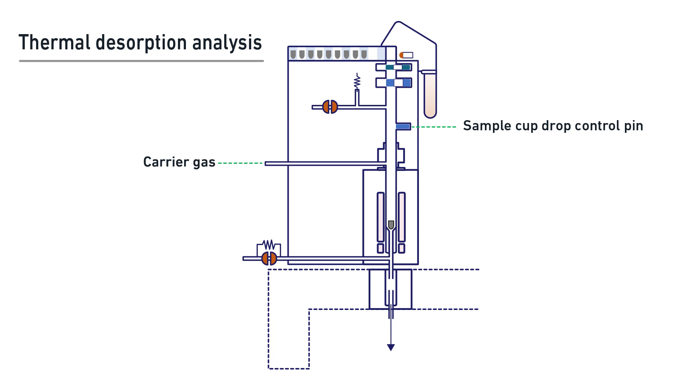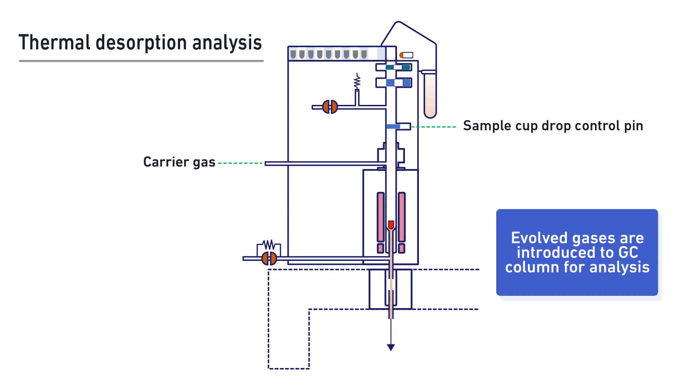First, the inert sample cup drops into the microfurnace. The volatile fraction of the sample, such as residual solvents, additives, monomers, and oligomers, is thermally desorbed, chromatographically separated, and detected by a mass spectrometer or other detector.